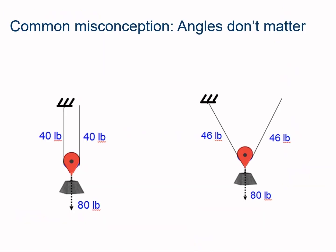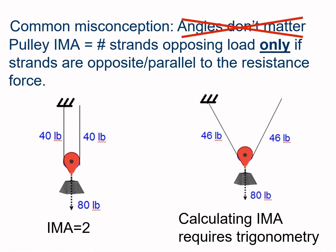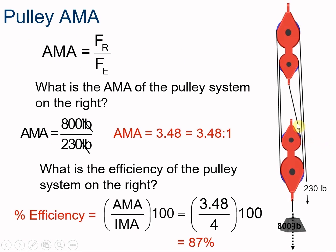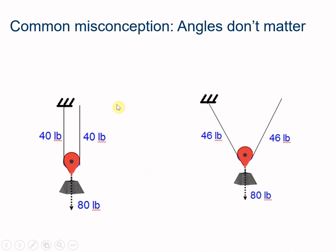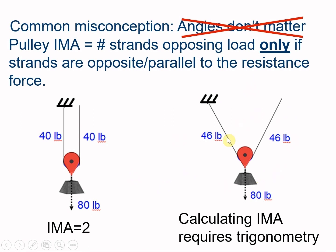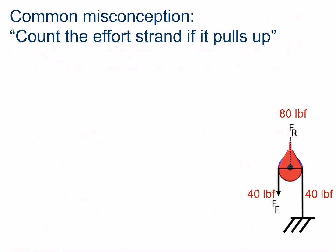Let's talk about a few misconceptions. First, angles don't matter — that this system on the left and this system on the right are the same thing. That's not true. For pulley IMA, the number of strands opposing the load only counts if the strands are opposite and parallel to the resistance force. The fact that one strand is at an angle would actually change the mechanical advantage — it would be more like 3.9 instead of 4. The angled one requires trigonometry — sines and cosines to break the force into x and y components.